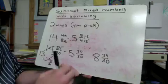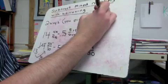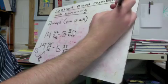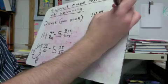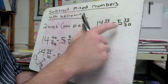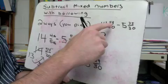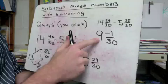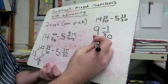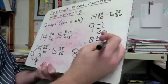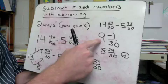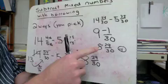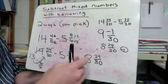Now the other way: fourteen and twenty-four thirtieths minus five and twenty-five thirtieths. Fourteen minus five is nine. Twenty-four minus twenty-five is negative one. So I have nine and negative one-thirtieth. I just count backwards one from nine — since I'm dealing with thirtieths, my next one down would be eight and twenty-nine thirtieths, because if I went up one from eight and twenty-nine thirtieths I'd get back to nine wholes. If that makes sense to you, use it. If not, use the other method.